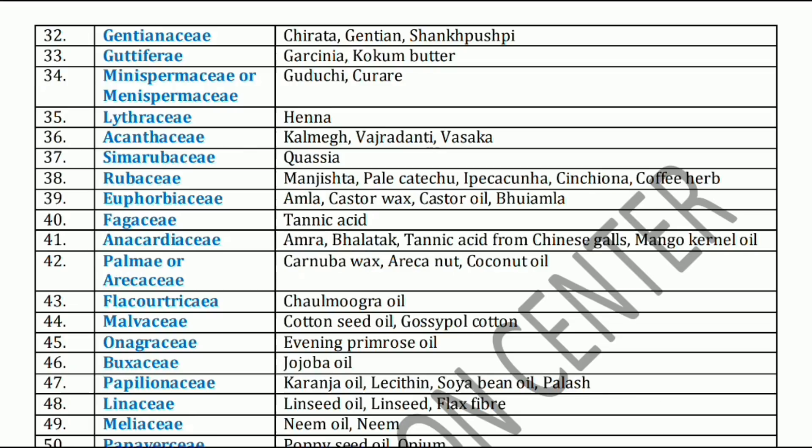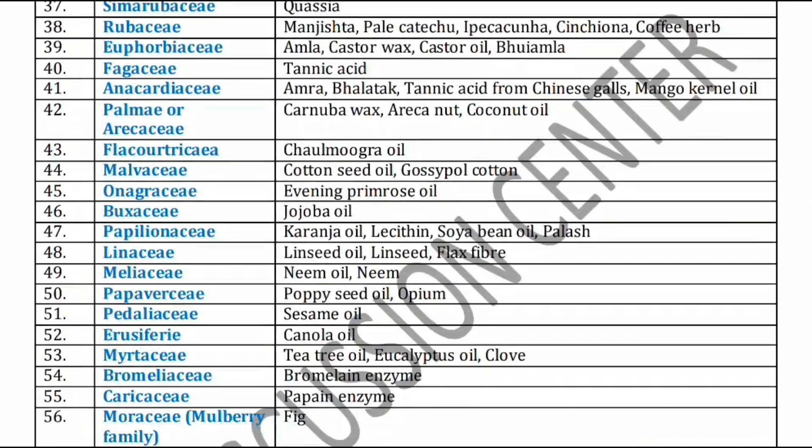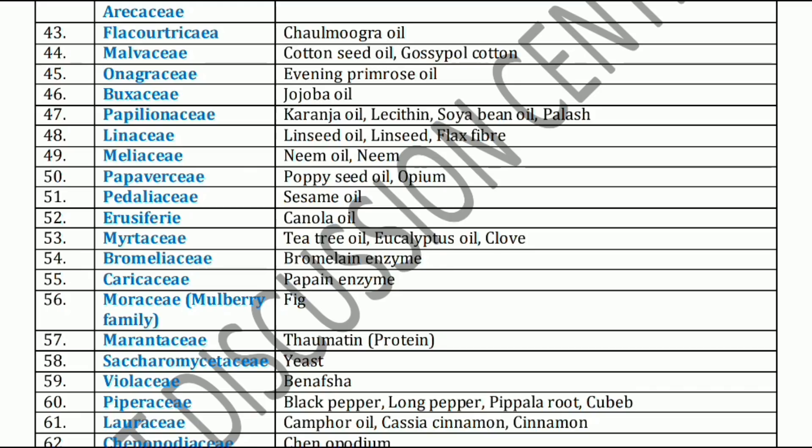Next, Flacourtiaceae family. Flacourtiaceae family includes Chaulmoogra oil. Chaulmoogra oil is used in leprosy. Next, Malvaceae family. Malvaceae family includes Cottonseed oil and Gossypol cotton.